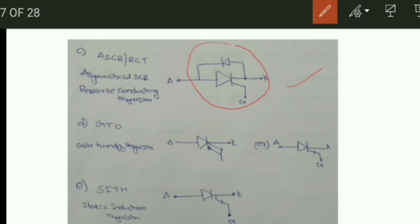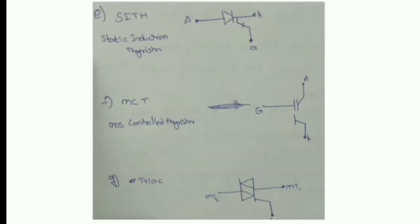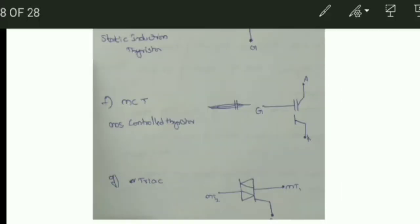Next is the GTO — Gate Turn-Off Thyristor — whose symbol is shown here. After that is the SITH — Static Induction Thyristor — with its corresponding symbol. Then comes the MCT — MOS Controlled Thyristor, which stands for Metal Oxide Semiconductor Controlled Thyristor — with its symbol shown.